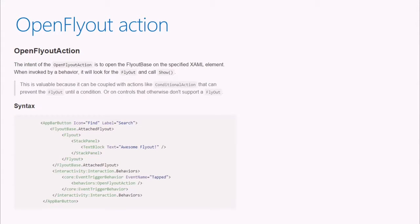Let's talk about the open fly-out action — one of seven that ship with the library. A fly-out is something you can attach to a button, and you click on that button and a fly-out appears, and it's natively implemented. But you can also implement a fly-out on just about anything, including an image, a grid, or even a push pin on a map control. And there's no native way to invoke the fly-out to open.